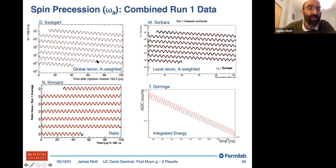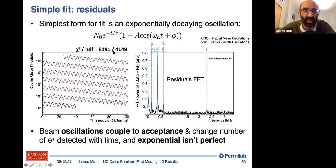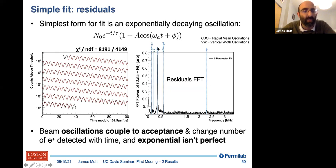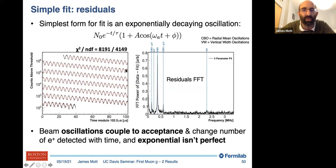The simplest fit is an exponentially decaying oscillation — a five-parameter fit. It looks pretty good by eye, but the chi-squared is terrible, around 2. Taking a Fourier transform of the residuals shows a large peak at the radial oscillation frequency. What's happening is that the beam oscillations couple to the calorimeter acceptance — when the beam is closer you see more positrons, when further away fewer — creating another oscillation on top. There's also a smaller peak because the exponential decay isn't perfect: we actually lose some muons from the storage ring before they decay, so fitting with one exponential gets it wrong.